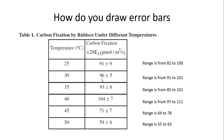For the value of 96, that's 96 plus or minus 5, meaning the rate could be anywhere from 91 to 101 micromoles per meter squared per second. The next value similarly has a range from 85 to as much as 101. What the standard error of the mean does is allow you to see the range for your mean from a low to a high.